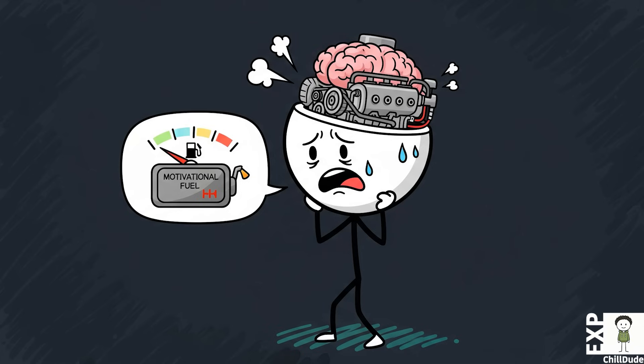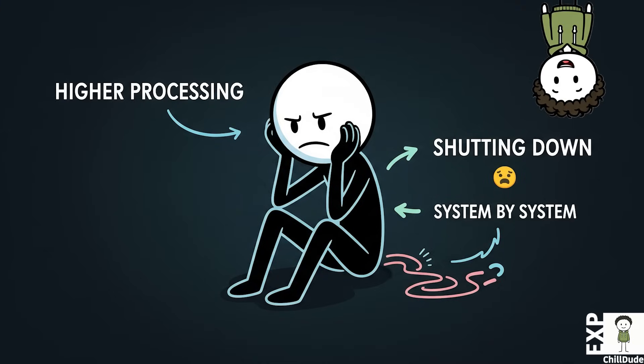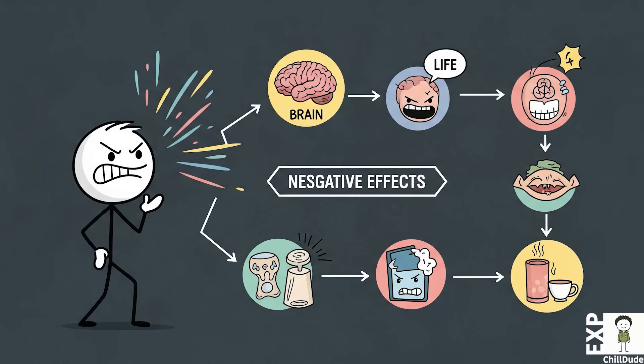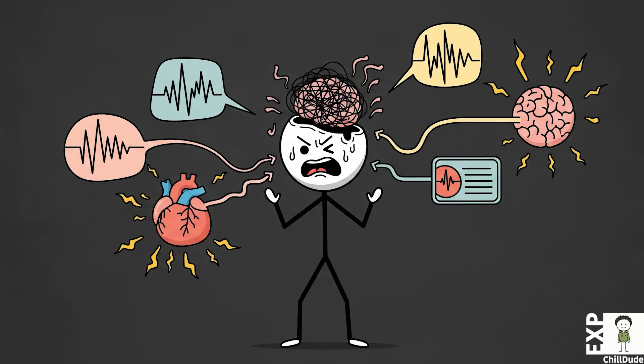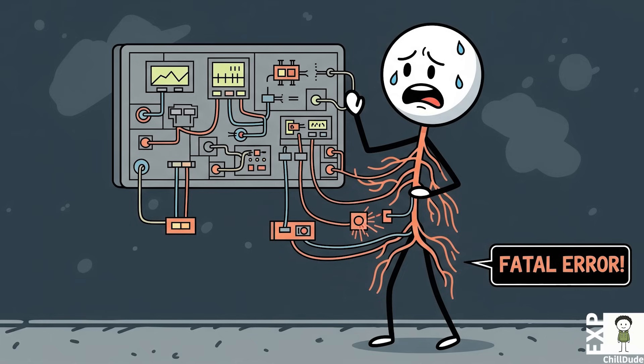The brain, deprived of its motivational fuel, can no longer command the body to perform the basic tasks of survival. It is a state of profound and systemic shutdown, originating in the highest centers of thought and cascading down to the most basic functions of life. This mental collapse is what allows the autonomic nervous system—the background system that regulates heart rate and blood pressure—to fall into the fatal dysregulation that marks the final stage of death.